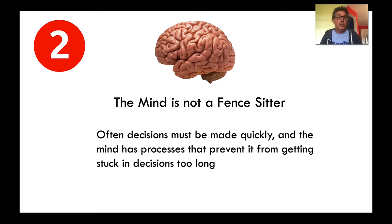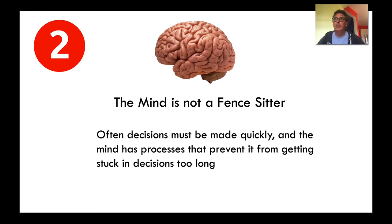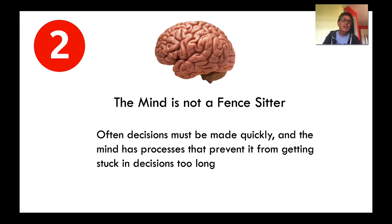Let me continue the story with the second critical point. The brain wants things to make sense and tries to find ways to do it, but the brain is also not a fence-sitter. Very early in the evolutionary cycle, fence-sitters got eaten. If you had to spend too much time arriving at a decision, quite often those decisions in those days were literally life or death — there's some sound, some smell, you better act now or you're going to be somebody's dinner. So sometimes decisions must be made quickly, and the brain has created a process that prevents it from being a fence-sitter.